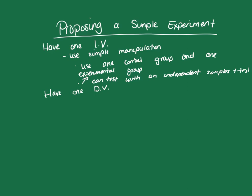If I was hypothesizing that those given gummy bears would have higher quiz scores than those who were not, I would use a one-tailed independent samples t-test. When proposing a simple experiment, keep everything simple: have one manipulation of your IV, typically experienced by the experimental group versus the control group, and have one clearly measurable dependent variable.